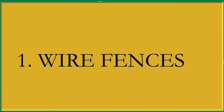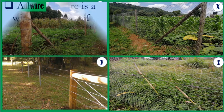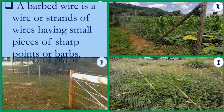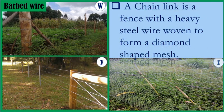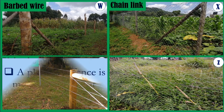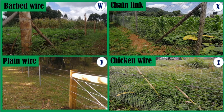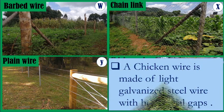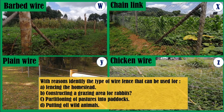The fences you have observed are wire fences. The first wire fence, W, is a barbed wire fence — a wire or strands of wires having small pieces of sharp points or barbs. The second wire fence, X, is a chain link fence, made of heavy steel wire woven to form a diamond-shaped mesh. The third wire fence, Y, is a plain wire fence — a wire that has no barbs. The fourth wire fence, Z, is a chicken wire fence, made of light galvanized steel wire with hexagonal gaps.